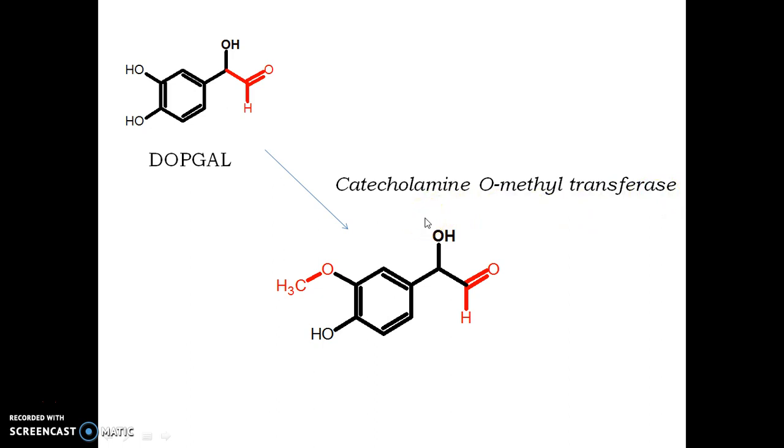As catechol structure is present in DOPGAL—it is also present in norepinephrine—this enzyme attacks the catechol and converts the third hydroxy group into an O-methyl group by transferring a methyl group to substitute hydrogen.